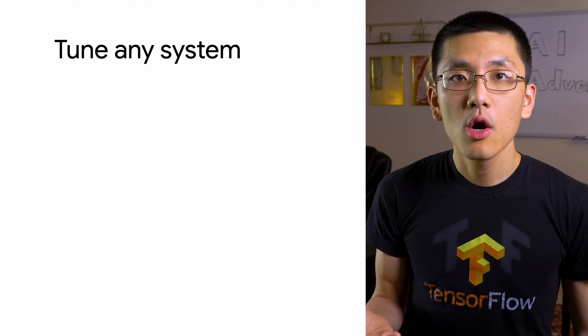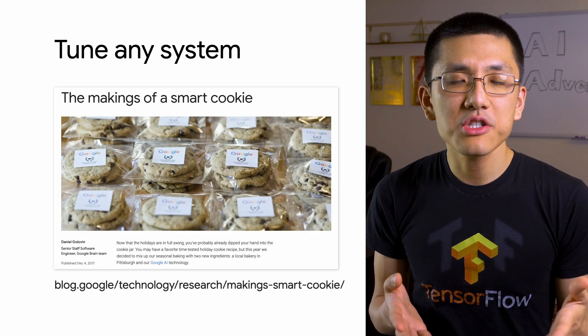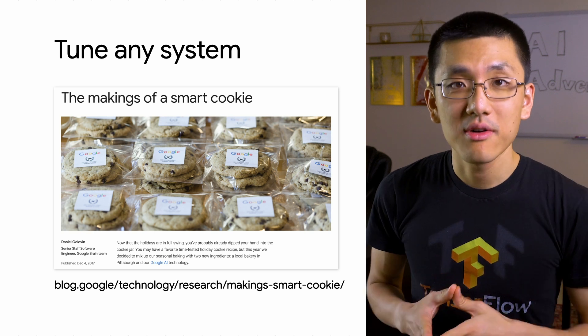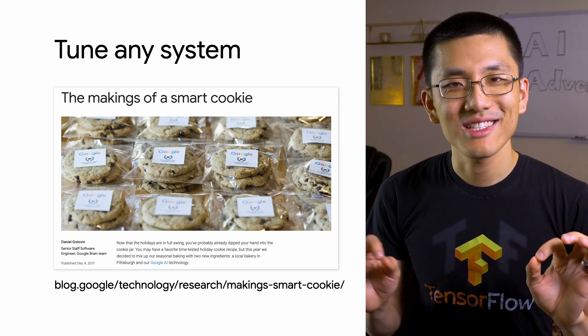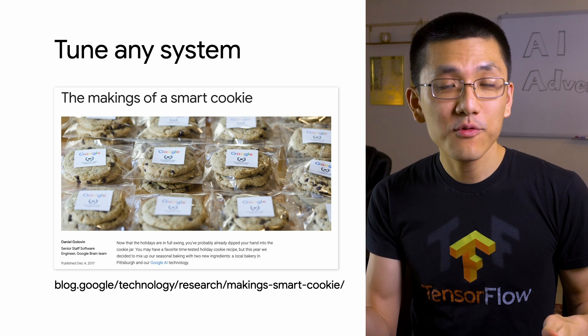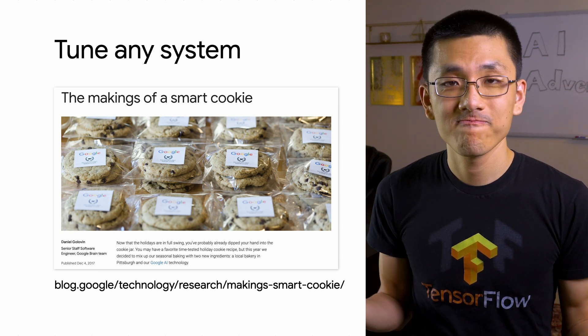Or perhaps you need to find an ideal buffer size and thread count to minimize computing resources for a job. Or maybe you need to optimize a cookie recipe, a bread recipe, or a brownie recipe to produce the most delicious version. You can, of course, also optimize non-food related things, though I'm not sure why you'd want to.